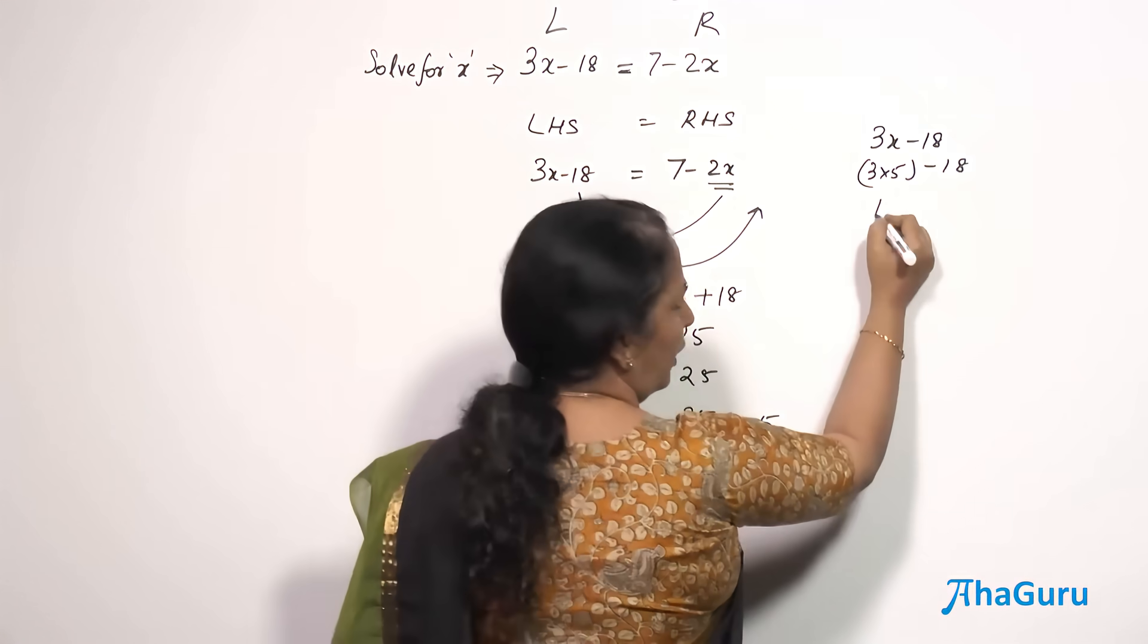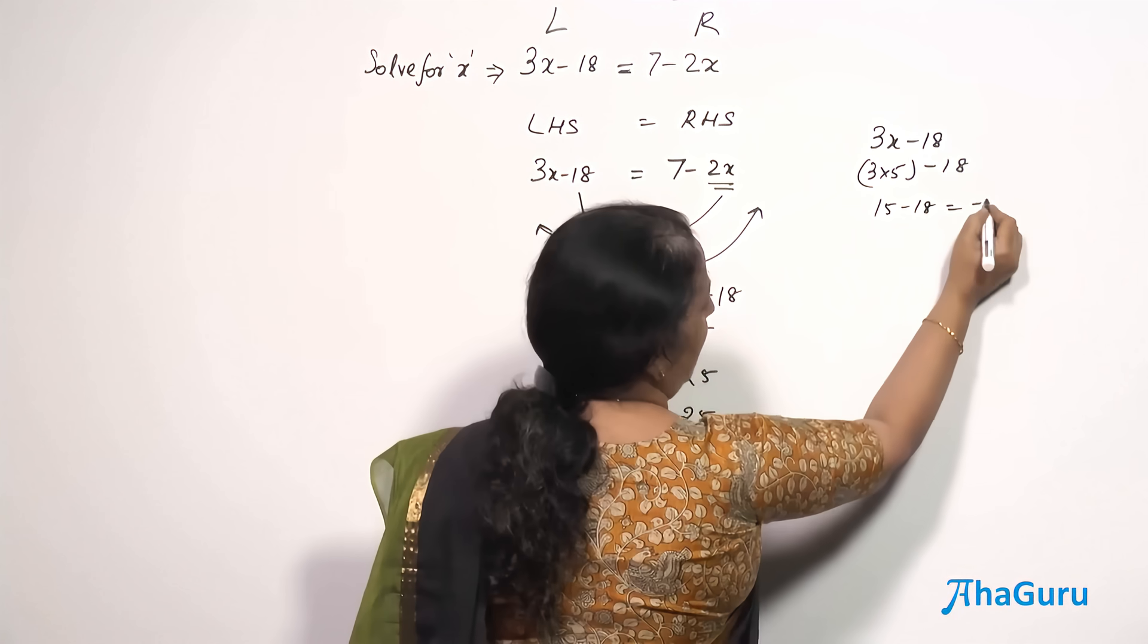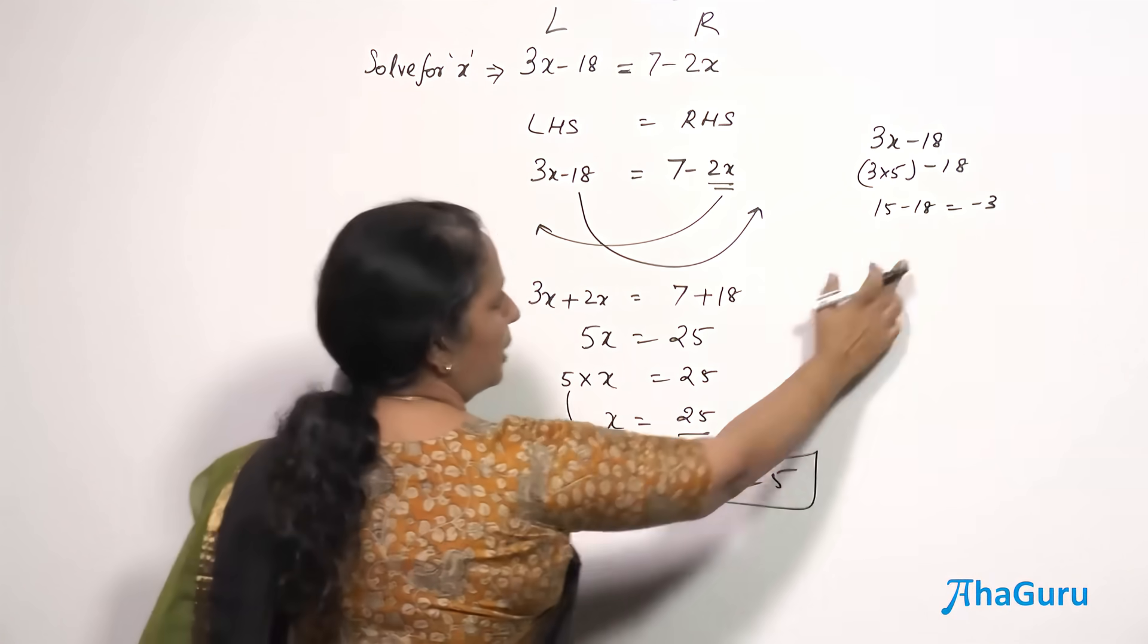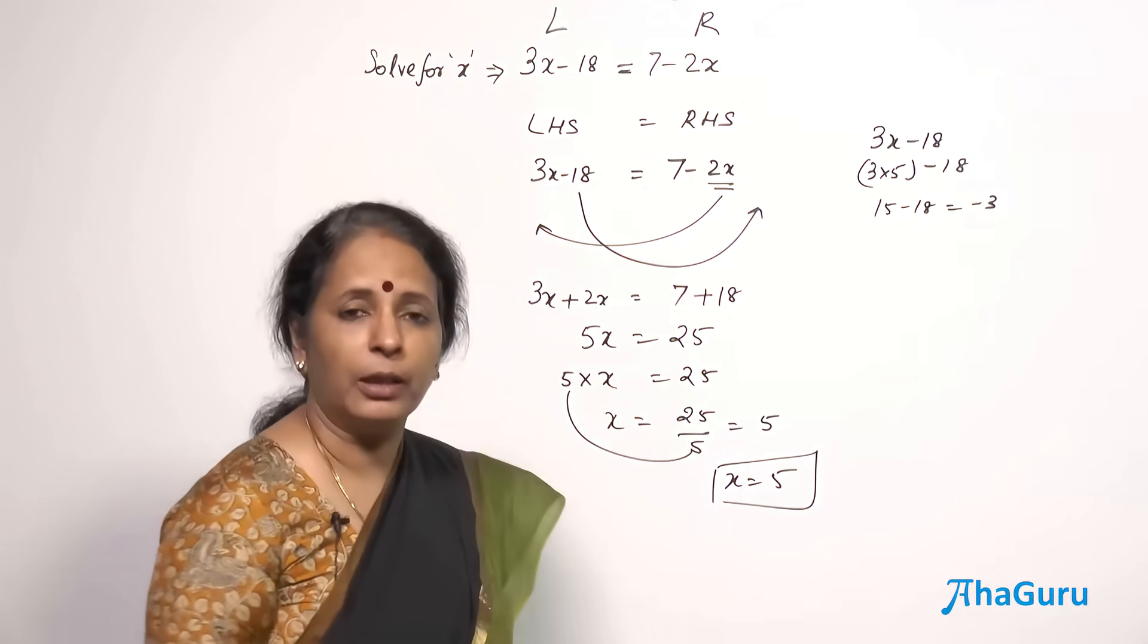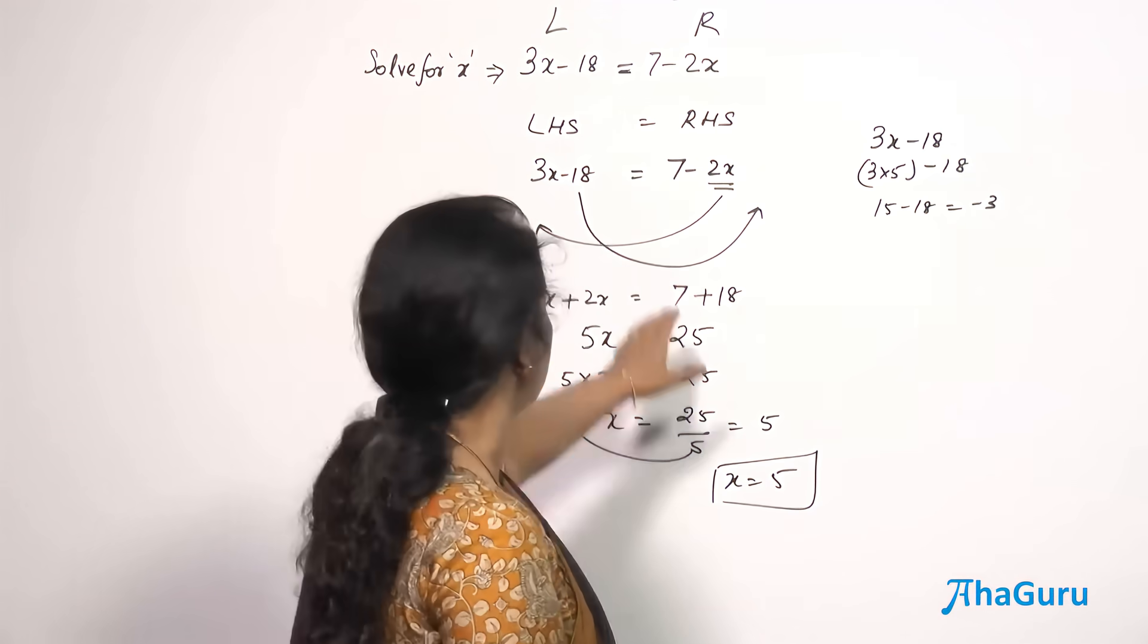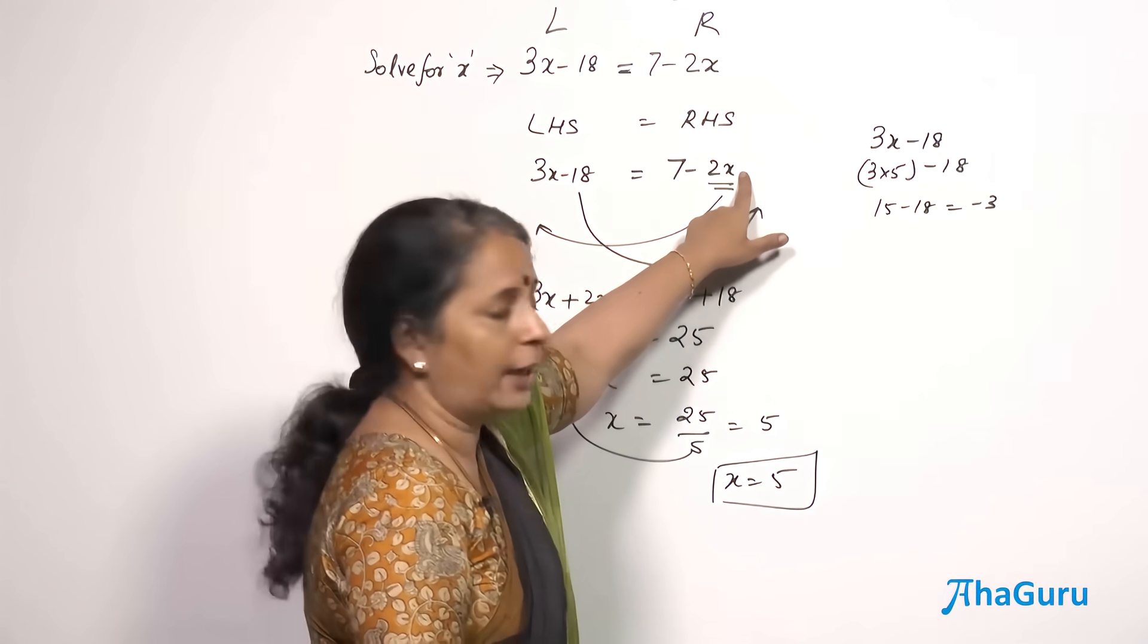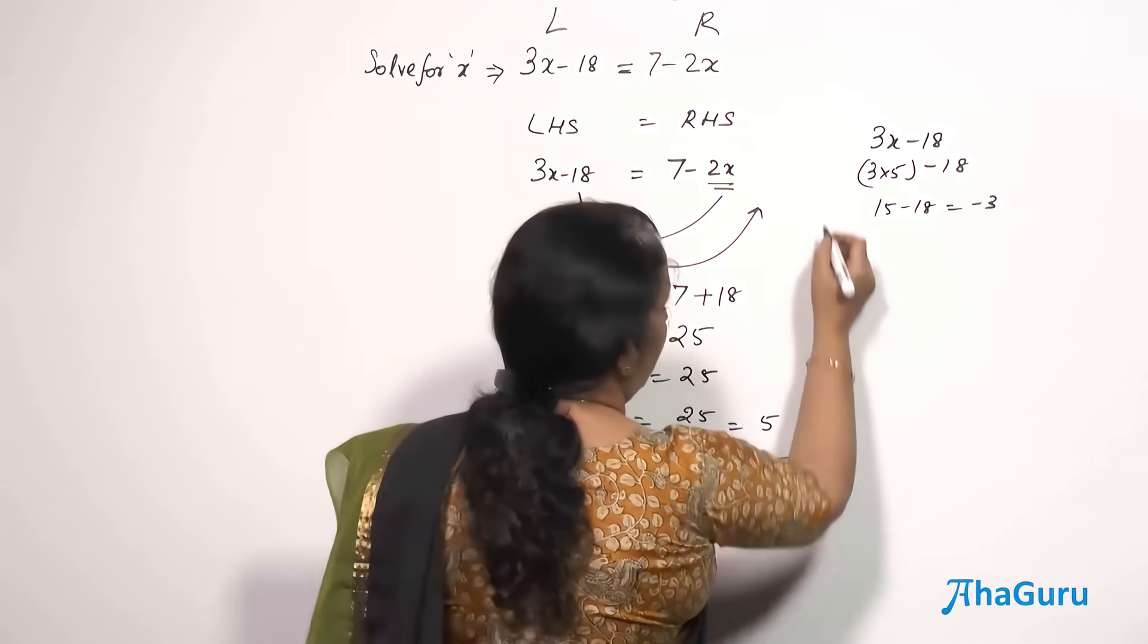What is 3 into 5? 15 minus 18 which is minus 3. So the LHS value is minus 3. It must be equal to the RHS value because I have put that equal to sign. So let us put x as 5 here. This is LHS.